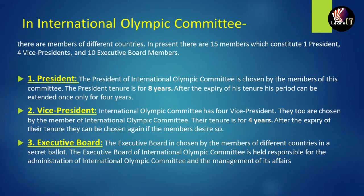The first point is the president. The president of IOC is chosen by the members of its committee. The timeline for the president is approximately 8 years. After the expiry of the timeline, his period can be extended only once, and that is also for only 4 years.